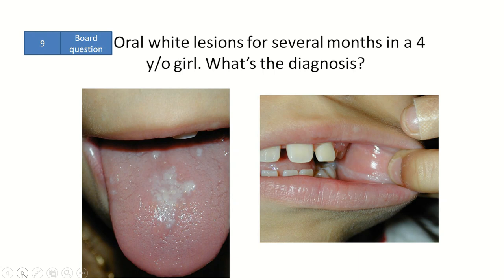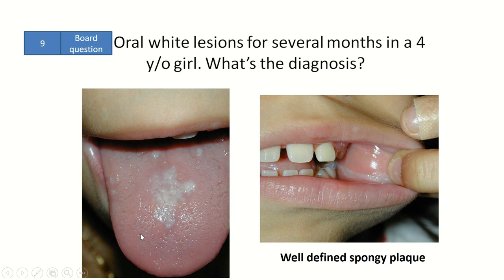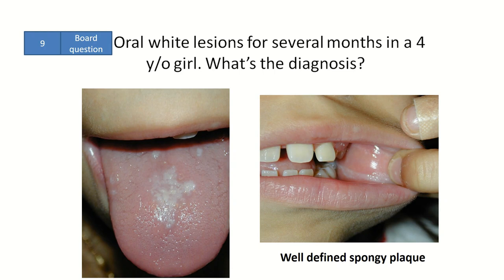Oral white lesions for several months in a four-year-old girl — what's the diagnosis? There is a well-defined white patch that is spongy. The diagnosis is white sponge nevus, which commonly involves the oral cavity and can involve any part of it, but is most commonly found on the buccal area.